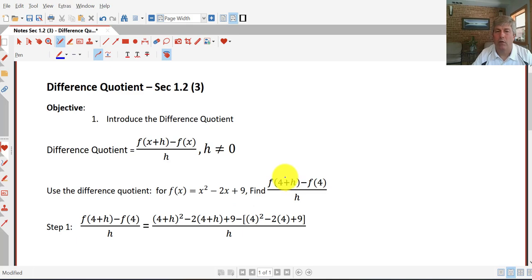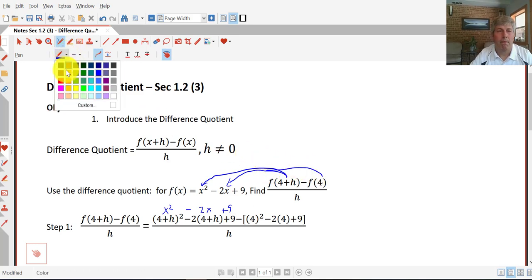So you can see that's what we've done here. We've taken 4 plus h, and we put it in for x, so that's why we have 4 plus h squared. And we put it in for x again at minus 2x. So we've got x squared minus 2x plus 9. That's the first part of our difference quotient, minus, and then our function, but now in our function we're going to put 4 in. So we're going to replace x with 4, so that's how we end up with 4 squared minus 2 times 4 plus 9.